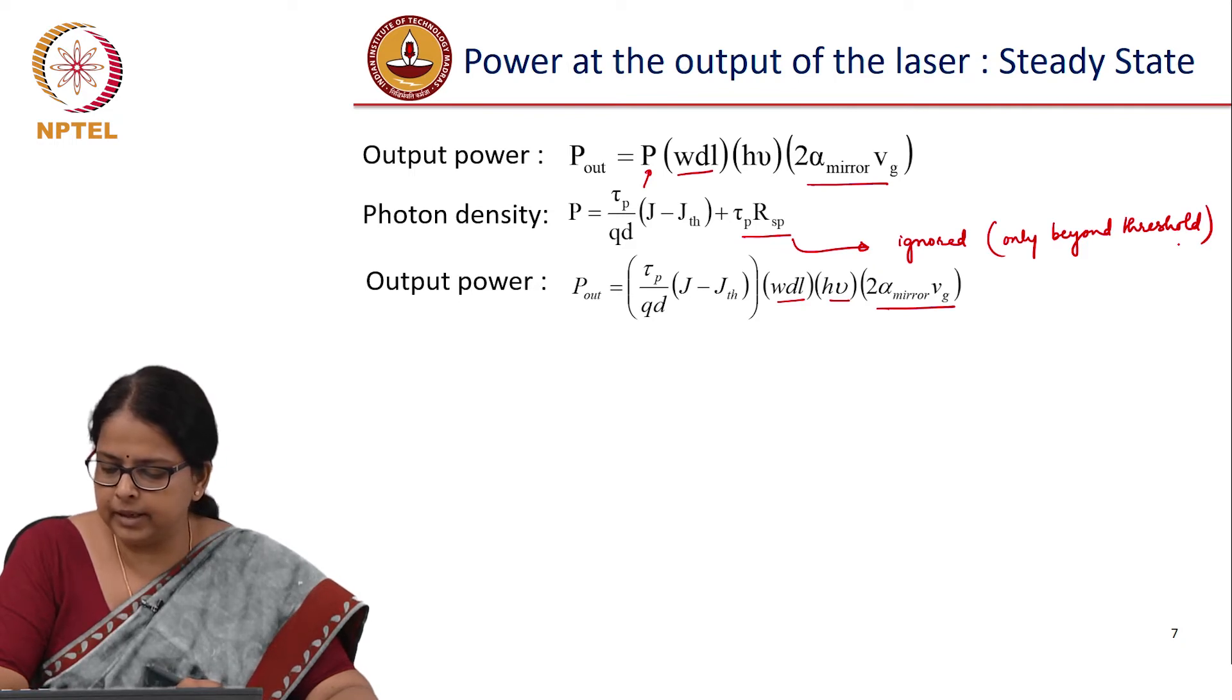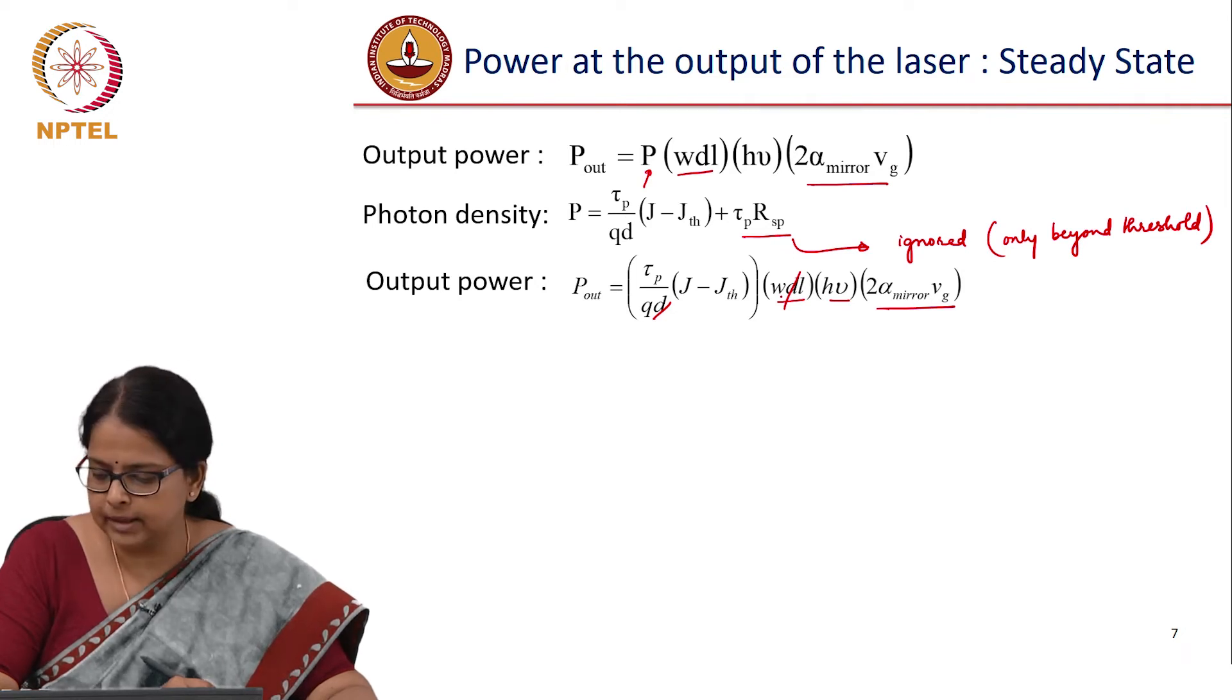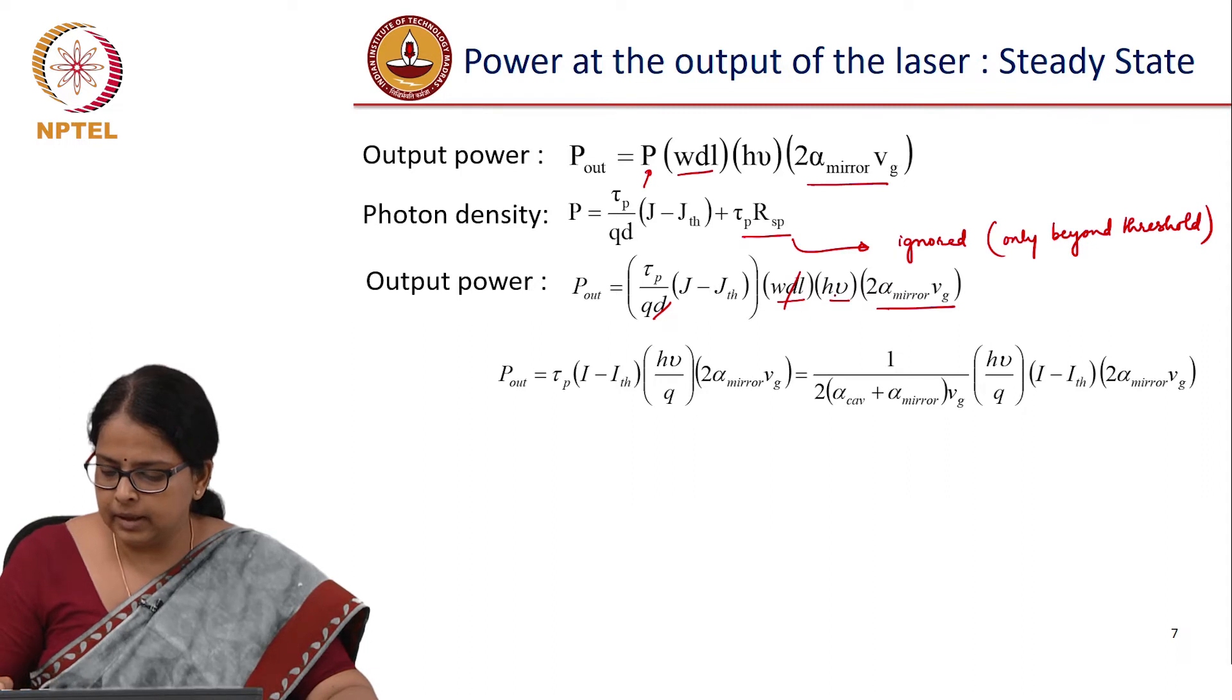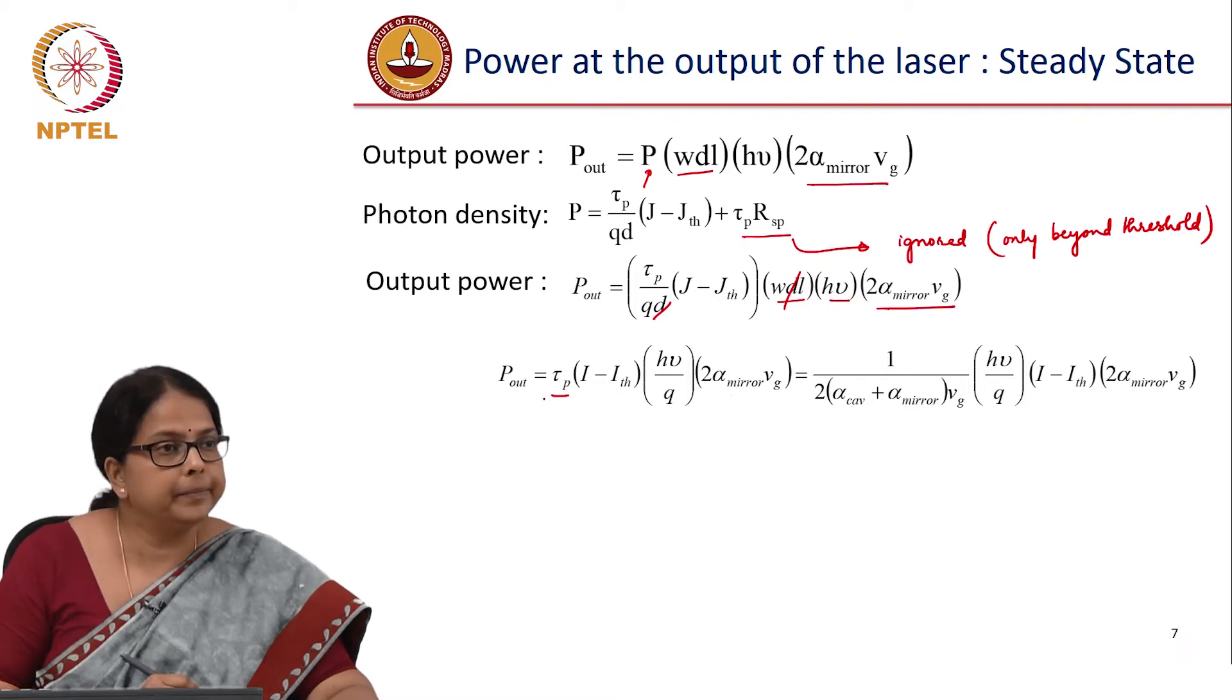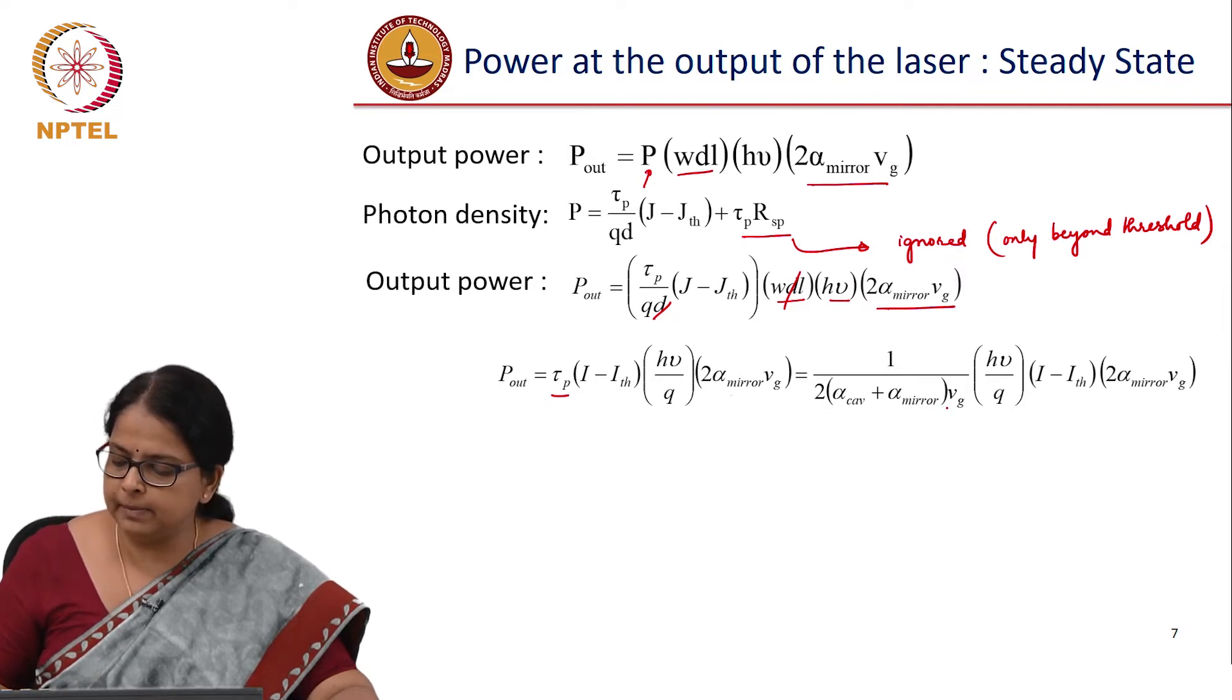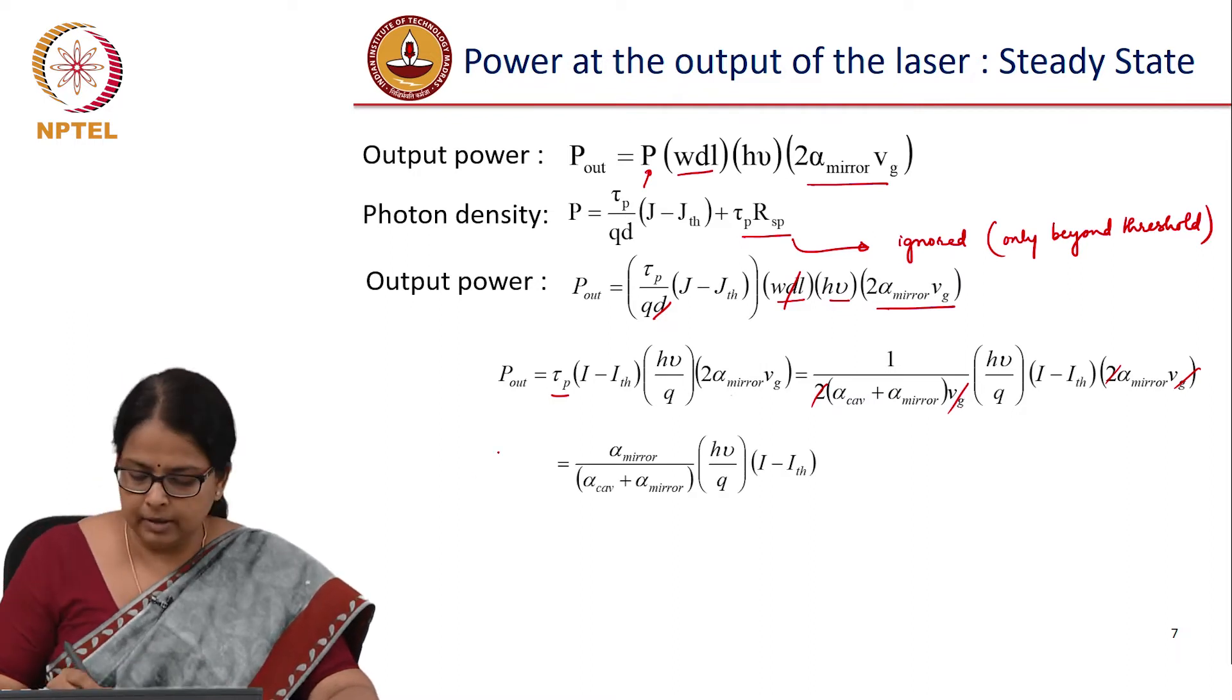And of course, now you can very clearly see that this d cancels, and J times W into length will give you the current because current density multiplied by area will give you the current. So this becomes hν divided by Q here. J minus J_th becomes I minus I_th, and then there is a 2α_mirror V_g. And I am substituting τ_P—we had derived τ_P yesterday—the photon lifetime. It has to be inversely related to the total loss in the system. So that is 1 over (2 by α_cavity plus α_mirror times V_g), of which this 2V_g can now get cancelled.